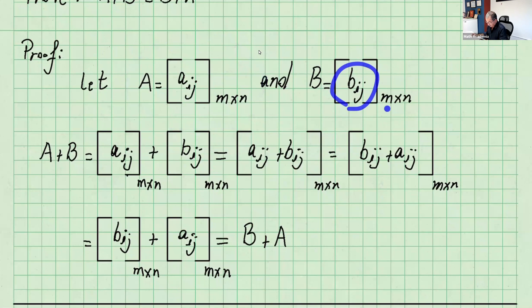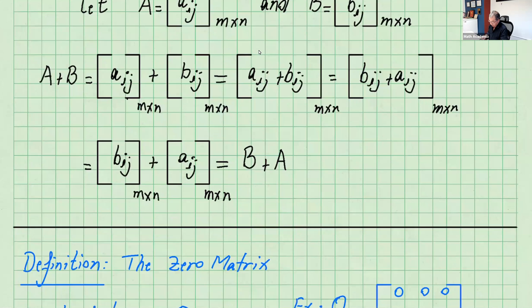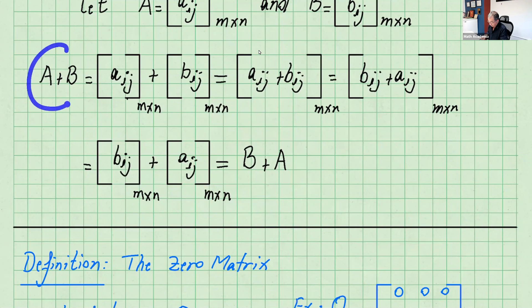When you do A plus B, you add the corresponding entries. That's m by n plus m by n, giving you a_ij plus b_ij — also m by n. Remember, these are just numbers. So you can use the commutative property for numbers: a_ij plus b_ij equals b_ij plus a_ij — still m by n. Separating those, you can write this as b_ij plus a_ij, which is the same as B plus A. Therefore A plus B equals B plus A. QED.